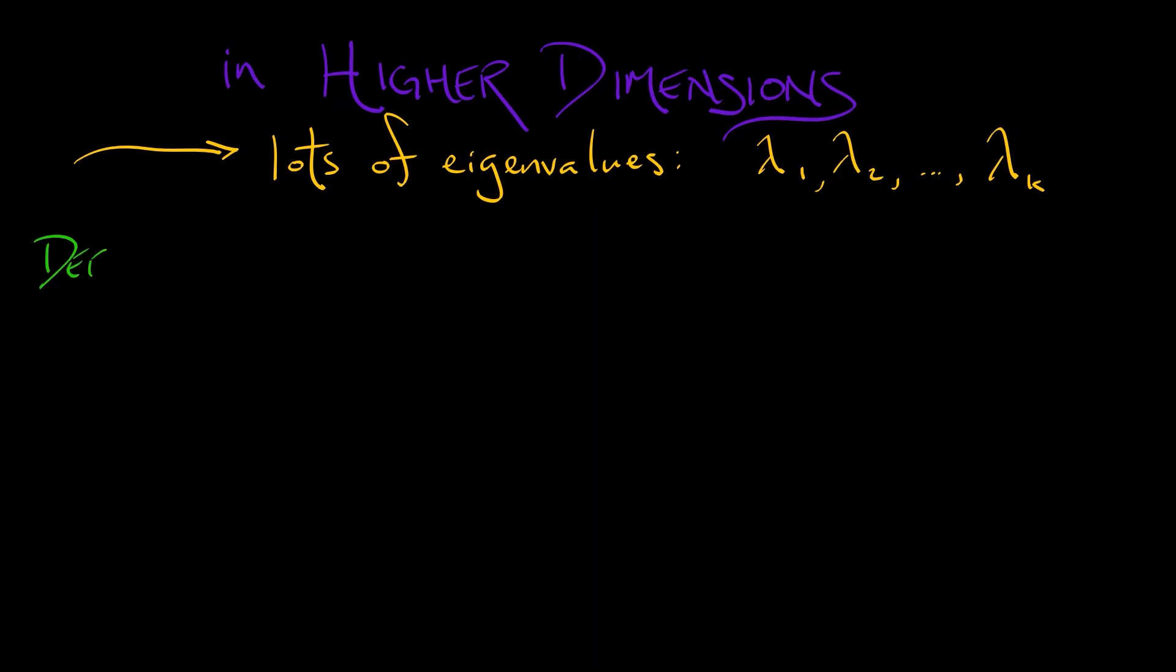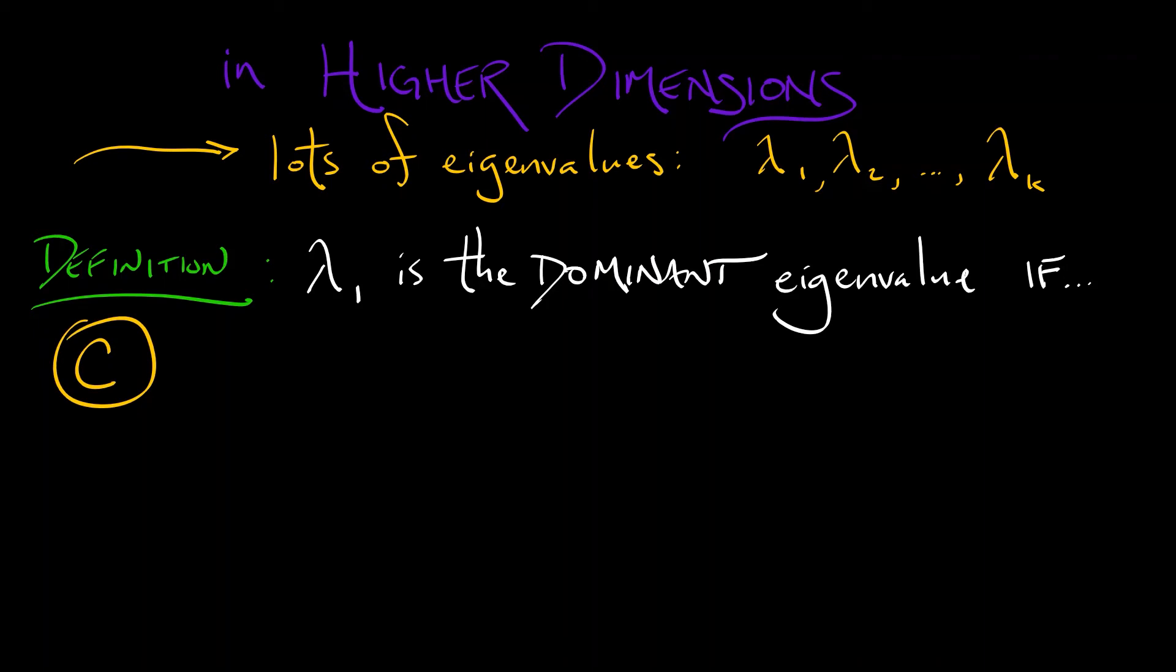Here's our definition. Lambda 1 is said to be the dominant eigenvalue if, in continuous time, this lambda 1 is strictly bigger than the real portions of all the other eigenvalues. Now why do we need that? The other eigenvalues might be complex.